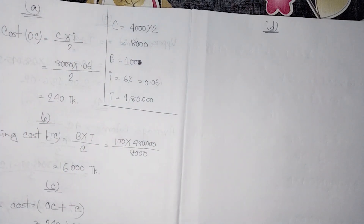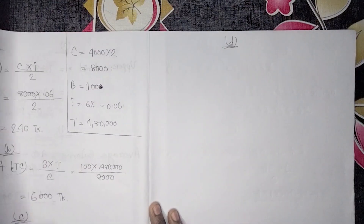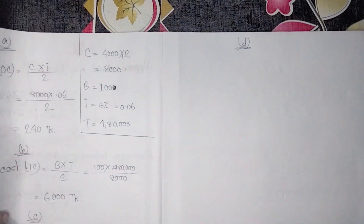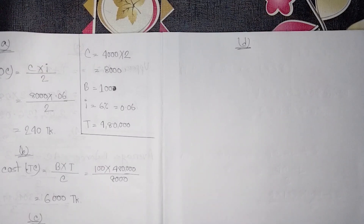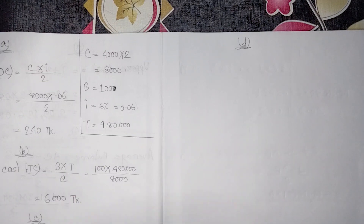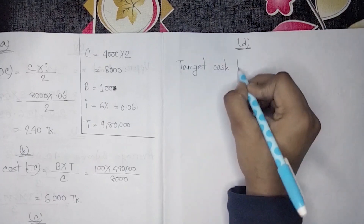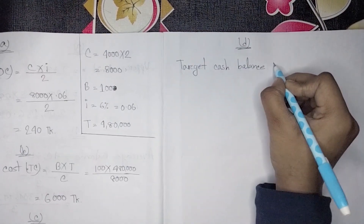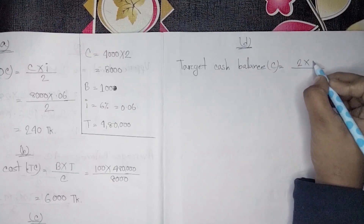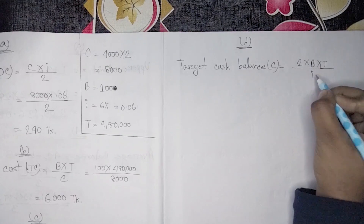We do not need the Miller-Orr model here. This model is the Baumol model. According to the Baumol model, the target cash balance formula is C* equals the square root of 2BT divided by I, where B is the transaction cost, T is total cash needed, and I is the interest rate.